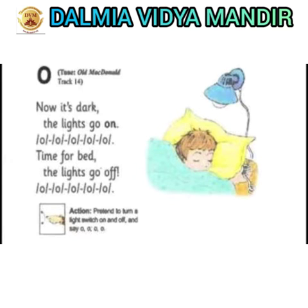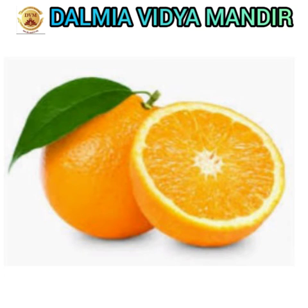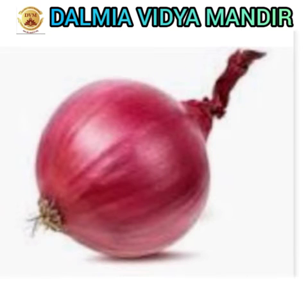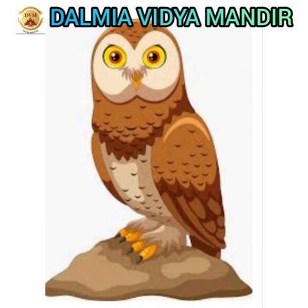Now we are going to learn the objects that start from the letter O. See here children. This is O for orange. O for octopus. O for onion. And this is owl — O for owl. Very good.